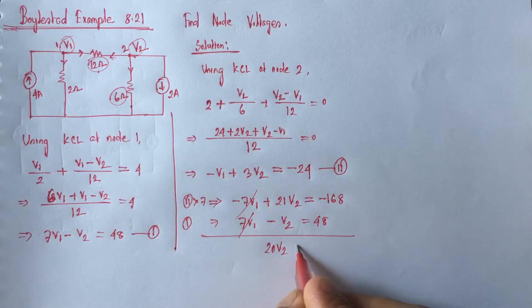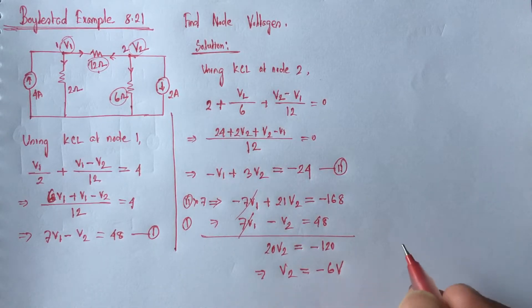This will be 20V2 equals minus 120. So, V2 is minus 6 volt.